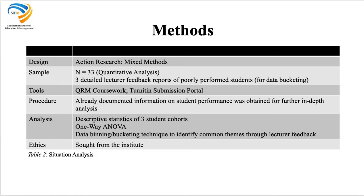We used a technique called data bucketing for that. For tools we used the QRM coursework and the Turnitin submission portal for feedback. The procedure involved obtaining all documented information on student performance from a couple of years back for further in-depth analysis. In terms of data analysis, we did descriptive statistics on the three student cohorts to see how students performed and how each cohort differed. We did a one-way ANOVA to see whether groups performed better than others in a statistically significant manner, then applied the data bucketing technique to identify common themes through lecturer feedback. We also obtained ethical clearance from the institute.